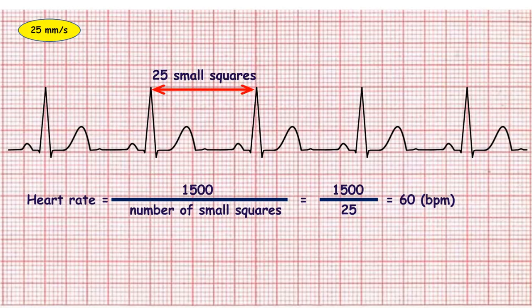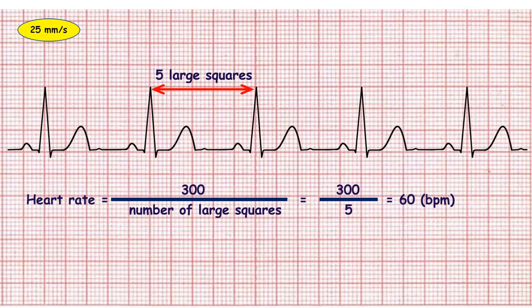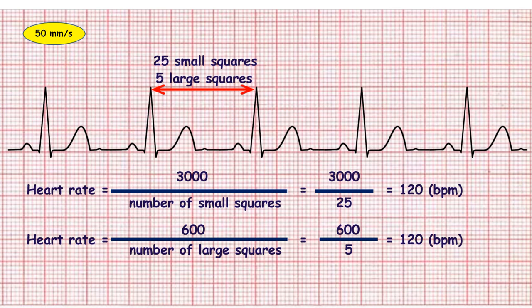The second method needs a calculator. You should count small squares between two sequential QRS complexes. If ECG speed is 25 millimeters per second, divide 1500 by the number of small squares. You can also calculate using large squares — divide 300 by the number of large squares. If ECG speed is 50 millimeters per second, divide 3000 by the number of small squares, or divide 600 by the number of large squares.